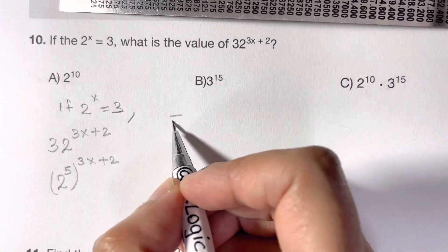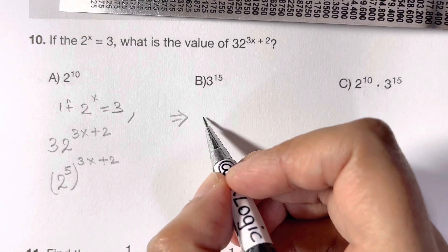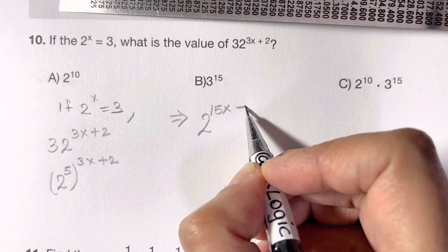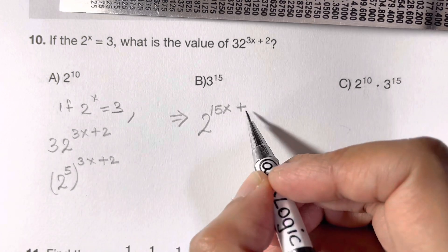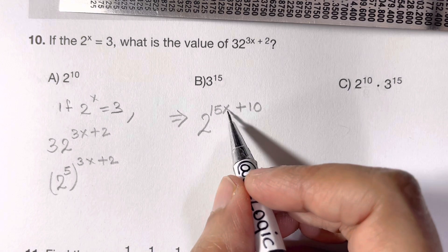We're going to write this side, just multiply the powers. 2 to the power of 5 times 3 is 15x, plus 2 times 5 is 10. So you have got 2 to the power of 15x plus 10.